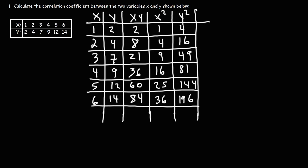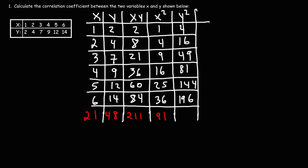Now our next step is to sum up each column. The sum of the x values is 1+2+3+4+5+6 = 21. The sum of the y values is 2+4+7+9+12+14 = 48. The sum of the xy products is 2+8+21+36+60+84 = 211. The sum of x squared values is 1+4+9+16+25+36 = 91. And the sum of y squared values is 4+16+49+81+144+196 = 490.